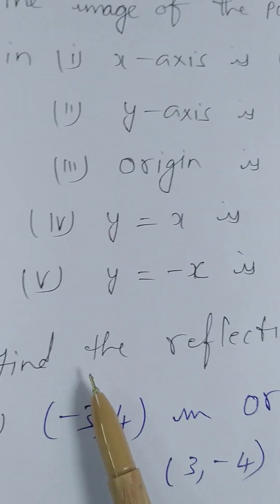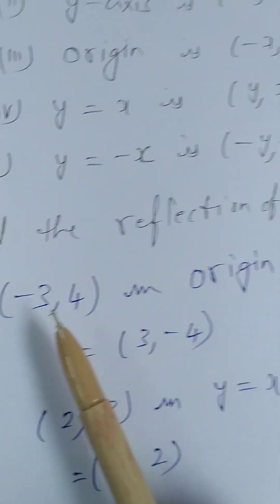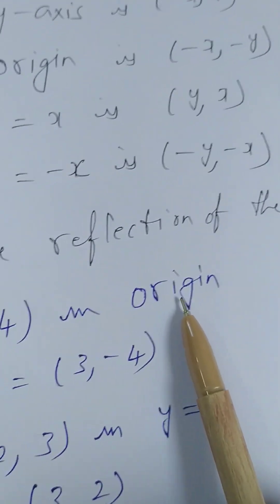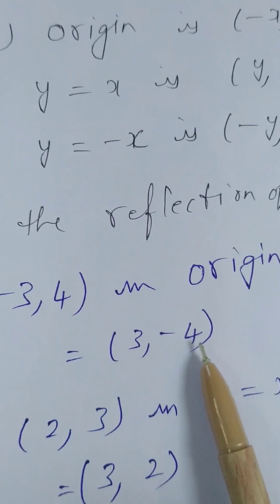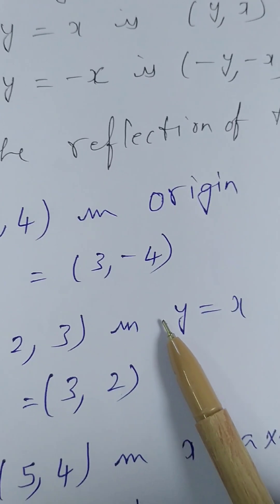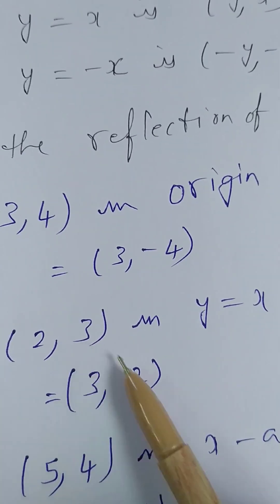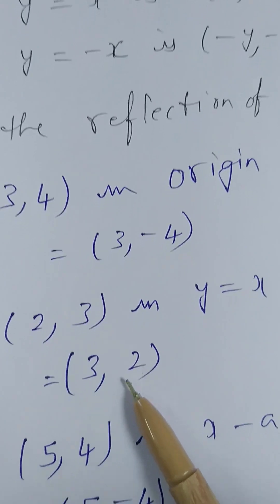Now we will apply these results in this question. Find the reflection of the point (-3, 4) in origin. Origin means you have to just change the signs: (3, -4). (2, 3) in y equals x. Y equals x means you have to replace - bring 3 here and bring 2 here.